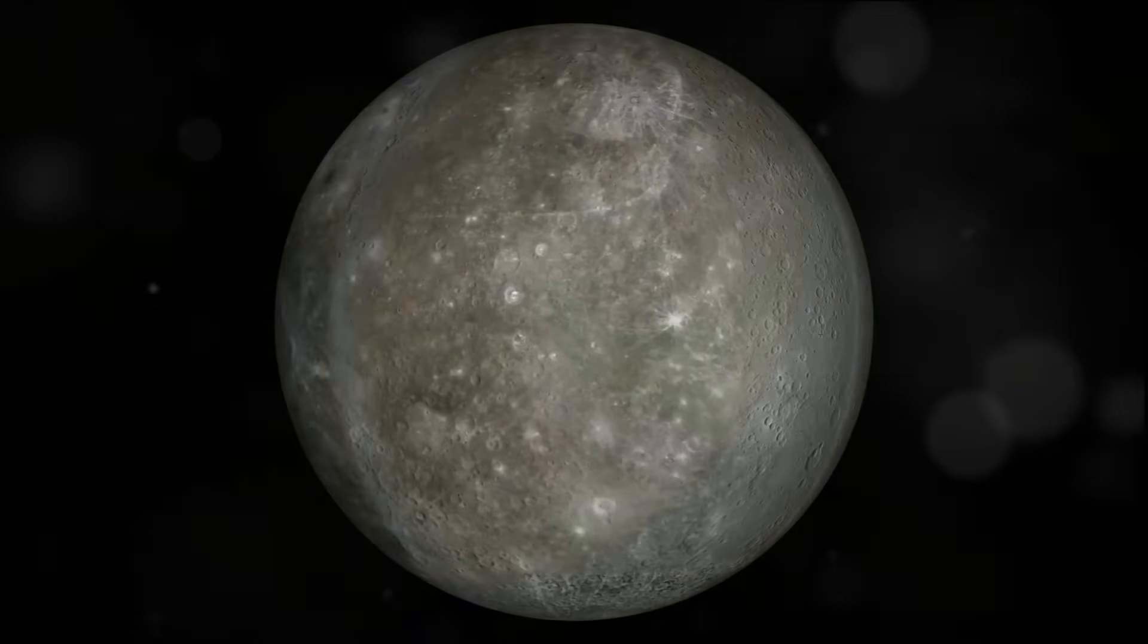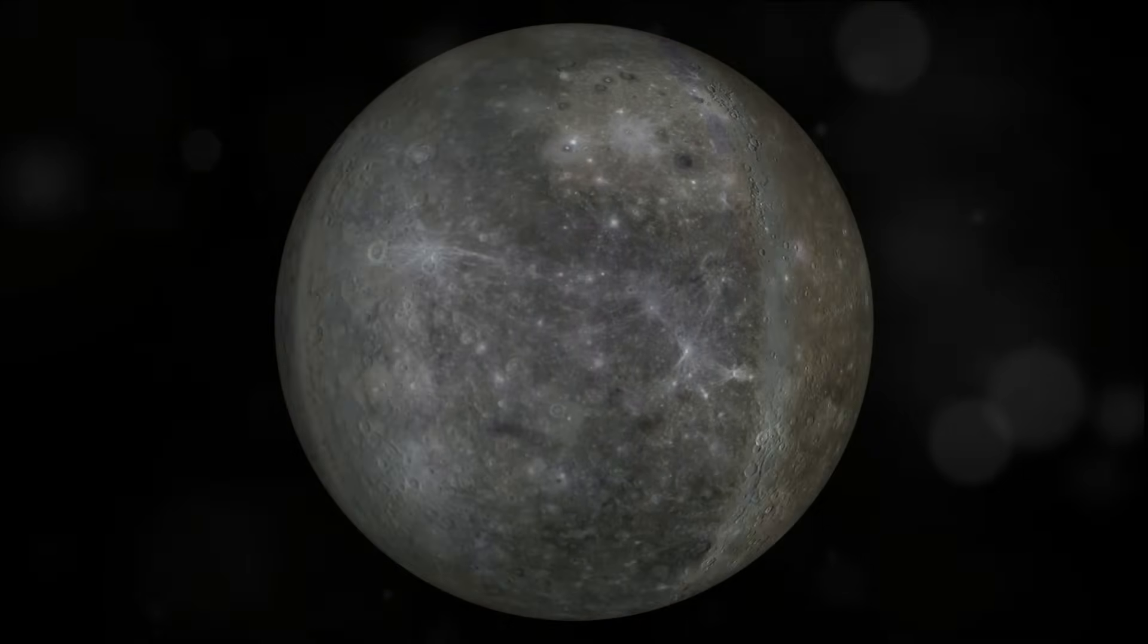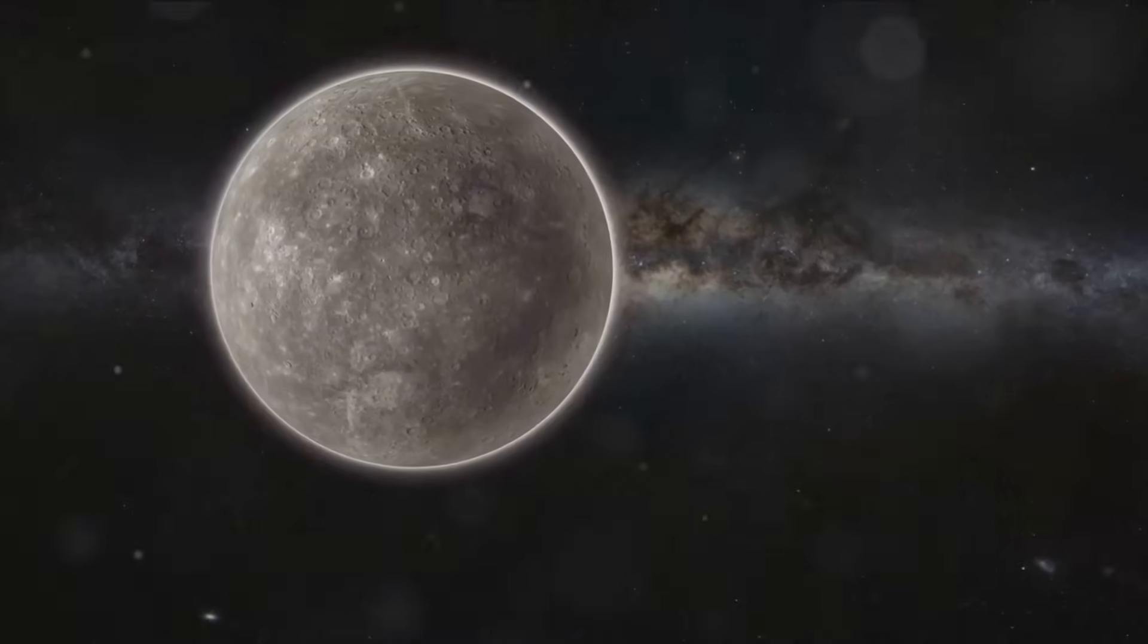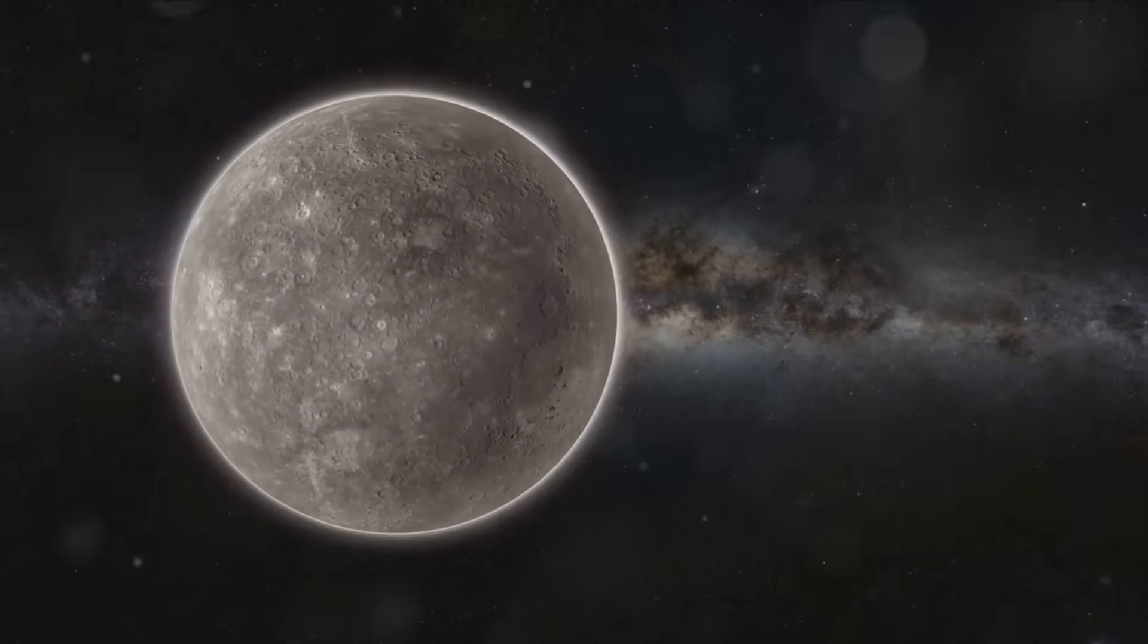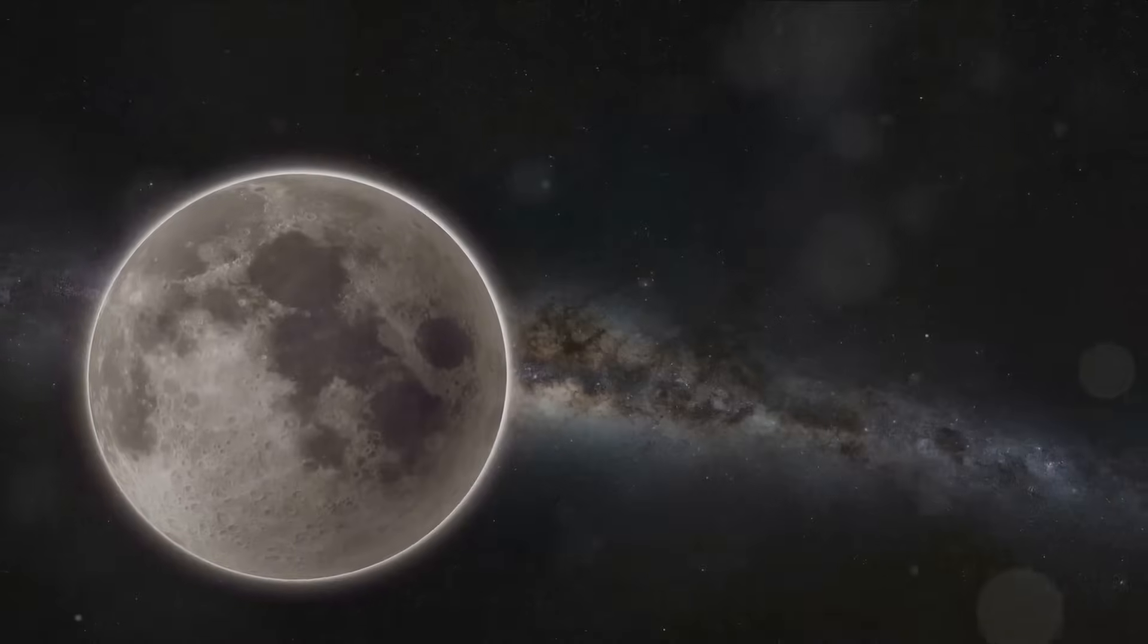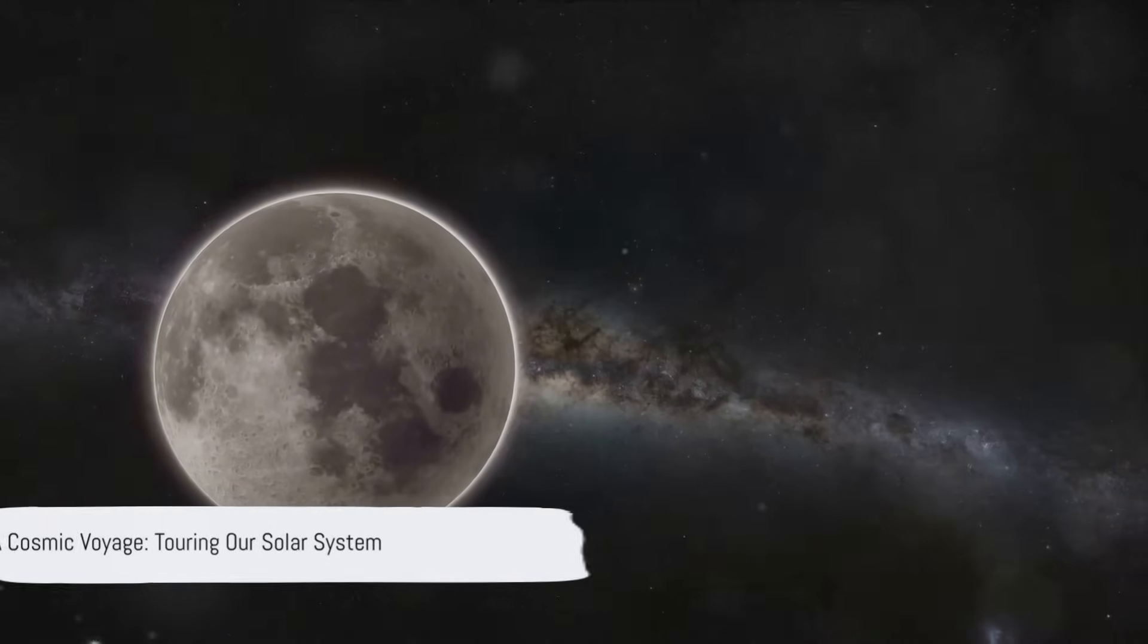Interestingly, a year on Mercury is just 88 Earth days, making it the swift planet indeed. But don't let its close relationship with the sun fool you. Mercury, despite its blazing days, is not the hottest planet in our solar system. That surprising title goes to our next planet. So buckle up as we continue our cosmic journey.